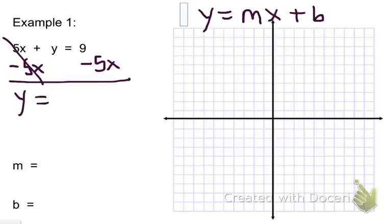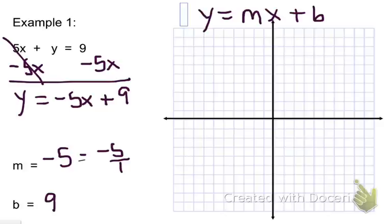Now because I want to rewrite this so it looks like slope-intercept form, I'm going to put the negative 5x first, and then that's with a positive 9, so I'll write plus 9. I now know my slope is negative 5, which I'm going to rewrite as a fraction, negative 5 over 1. My y-intercept, or b, is going to be positive 9.